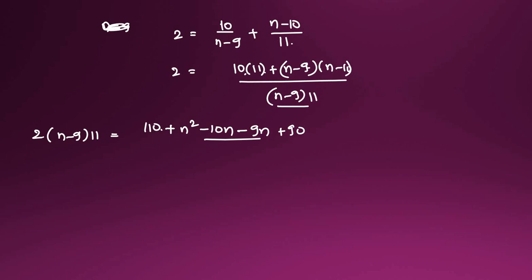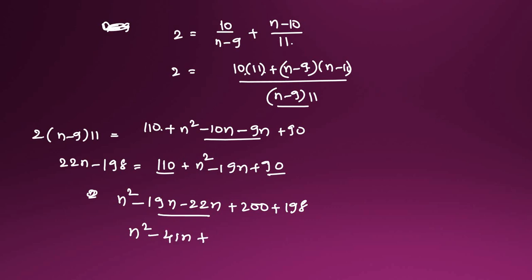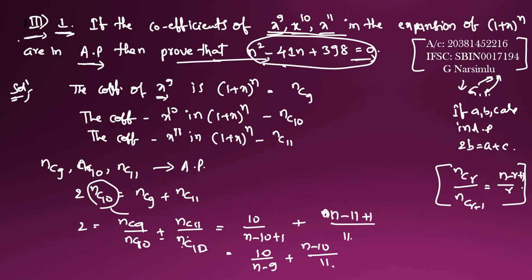Continuing the expansion: 22n - 198 = n² - 19n + 200. Rearranging: 0 = n² - 19n - 22n + 200 + 198, which gives n² - 41n + 398 = 0. This is what we needed to prove.